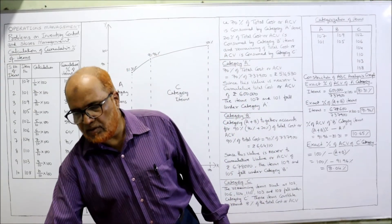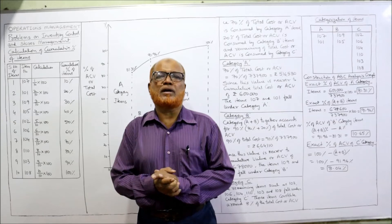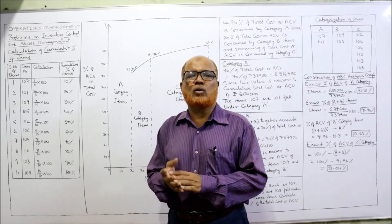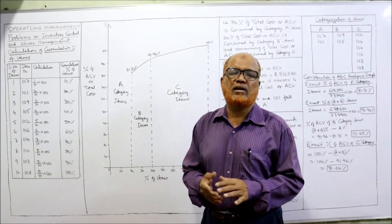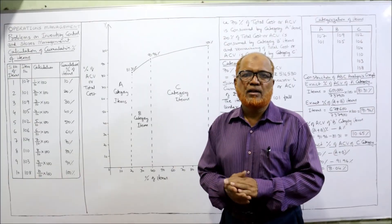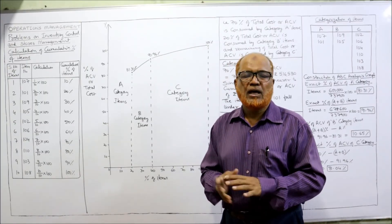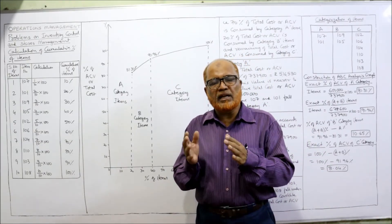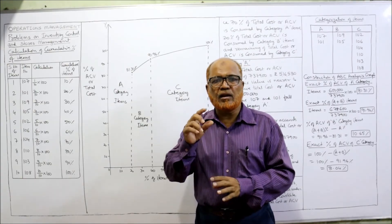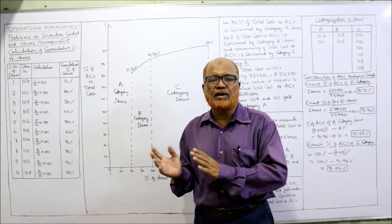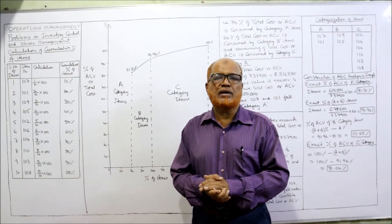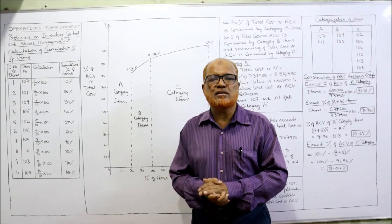We have completed the topic of inventory control and stores management. In five theory videos I explained complete concepts: what is inventory control, decisions of inventory control, and techniques like EOQ, ABC analysis, and selective methods. Then in six problem videos, we covered EOQ calculations, discount decisions, stock levels (reorder level, maximum, minimum, average), and one problem on ABC analysis. This marks the end of the topic in operations management.